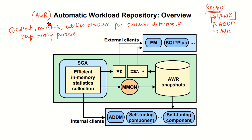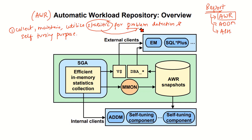This AWR report provides services to Oracle database components to collect, maintain, and utilize statistics. Our ultimate goal is to check the report, which is in the form of statistics, in order to analyze and detect problems from this report — specifically, what is the problem for this database instance — and after analyzing, how to tune it.